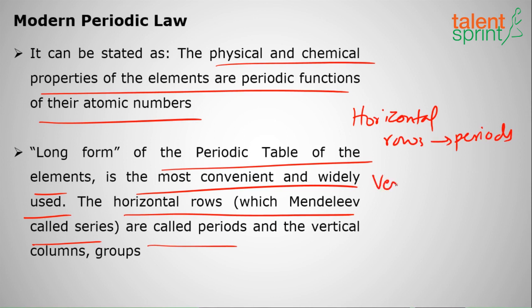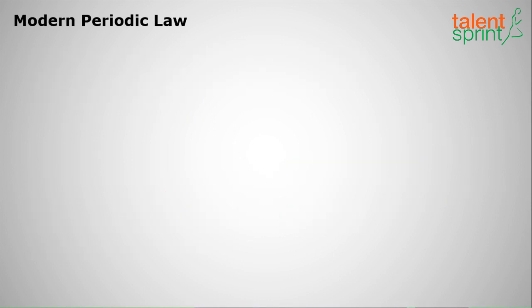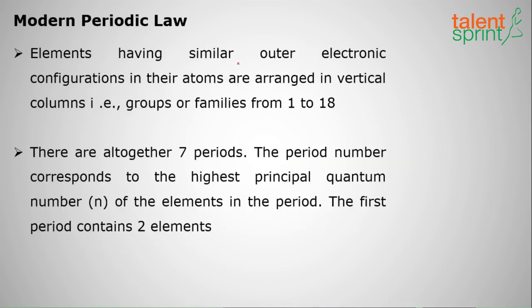Horizontal rows are called periods and vertical columns are called groups. Elements having similar outer electronic configuration in their atoms are arranged in vertical columns. Valence electron means the outermost shell electron.